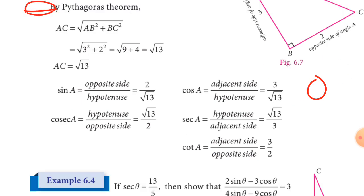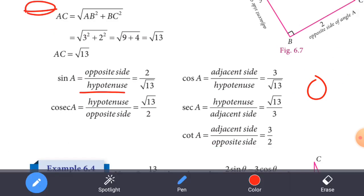Let's see what we have. Sin A is equal to opposite by hypotenuse. Opposite is 2, hypotenuse is root 13. Cosec A is equal to hypotenuse over opposite, root 13 by 2.